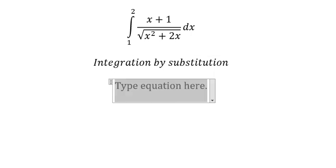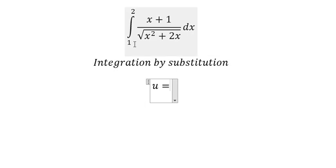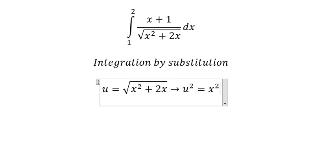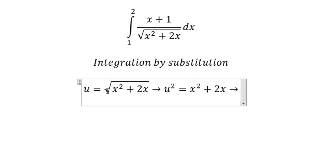So we put u equals to this one. We put the square for both sides because we want to cancel the square root.